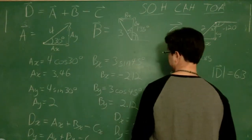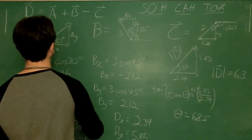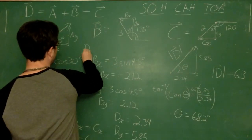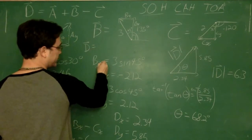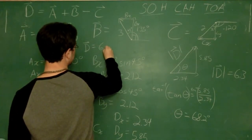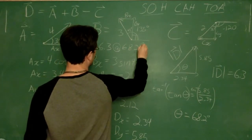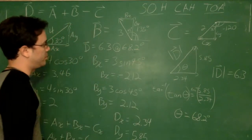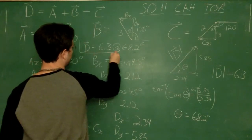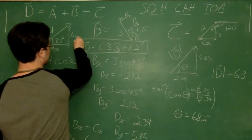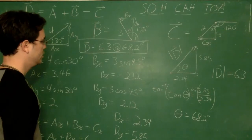So in the end, my D vector, I'm going to write it right here. D vector equals 6.3 at 68.2 degrees. And since I don't have it marked with anything else, that is with respect to the positive x-axis. So there's my result.